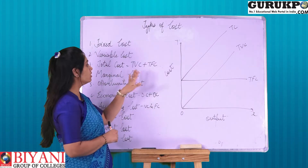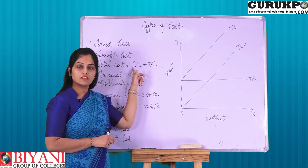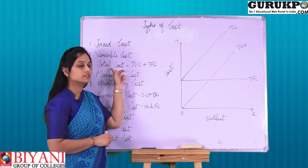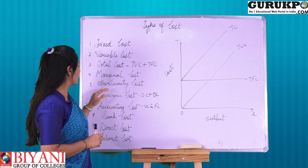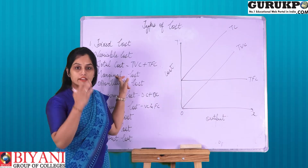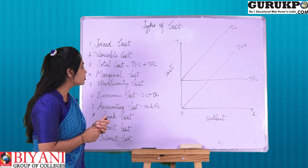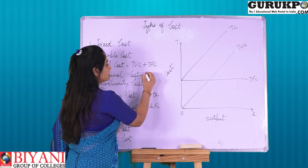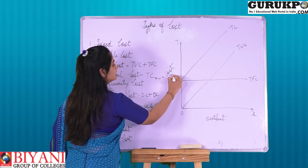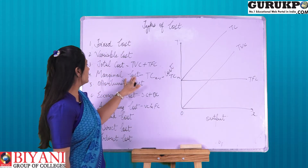Total cost is equal to Total Fixed Cost (TFC) plus Total Variable Cost (TVC), which gives you TC — total cost. What is marginal cost? The word 'marginal' means an addition. Marginal cost means an addition in the total cost, and it can be calculated by TC(n) minus TC(n-1).